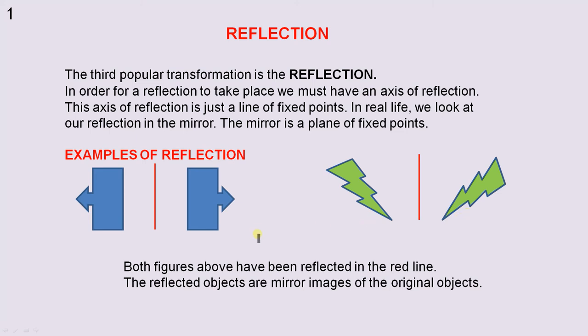Here are some examples of reflection. Both figures above have been reflected in the red line. The reflected objects are mirror images of the original objects. So, just pretend there's the original object, that's like a mirror, and that's the reflected object. Here's the original object, there's the mirror, and that's the reflected object.